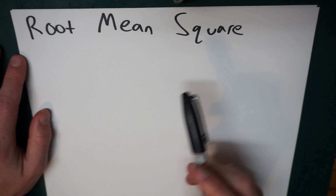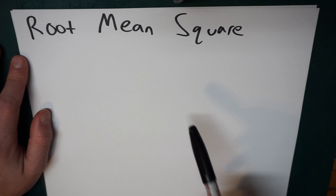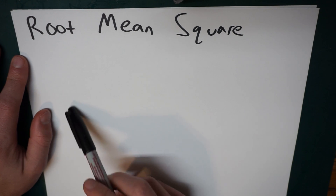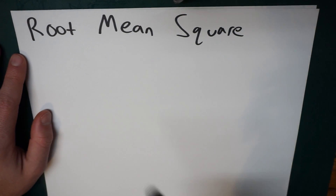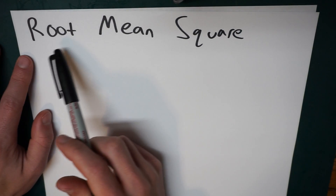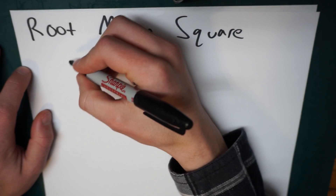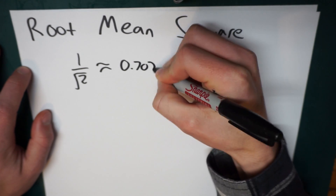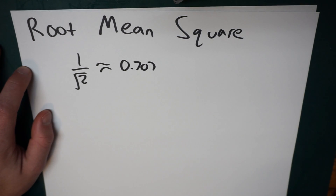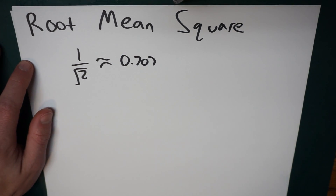Alright guys, if you made it past the last video, this is going to be a proof of the root mean square. I'm not going to explain peak values versus RMS values in this because I did that in the last video. This is only going to be a proof to show you where that root mean square, or 1 over square root of 2, approximately 0.707, where this number actually comes from, because I kind of pulled this out of thin air on the last video. I promised I would prove this, so let's go ahead and take a look at it.